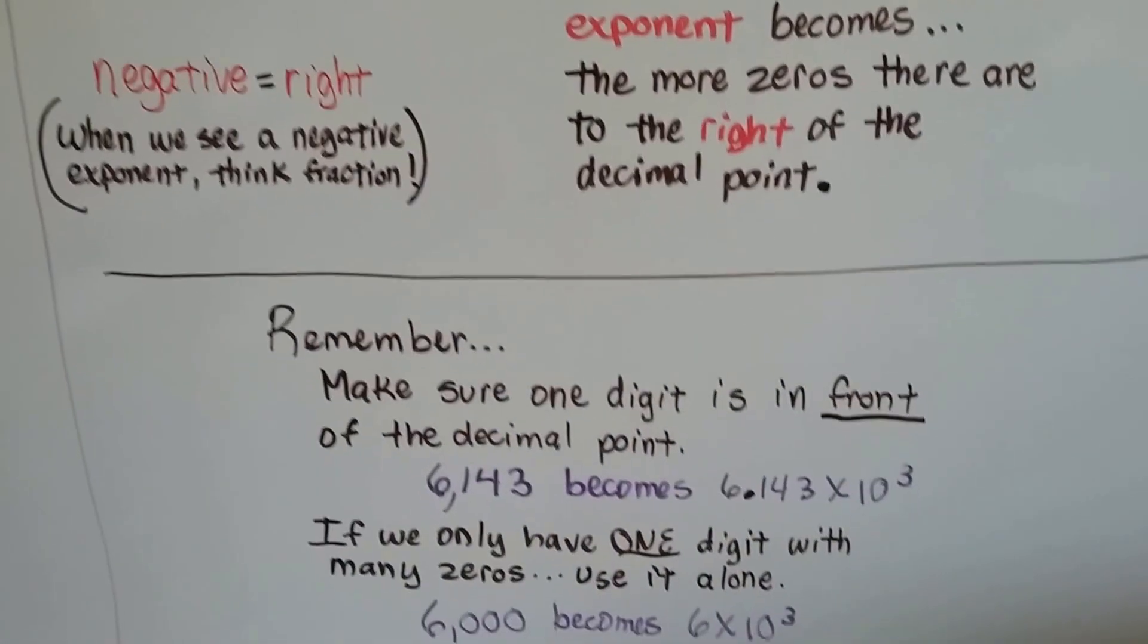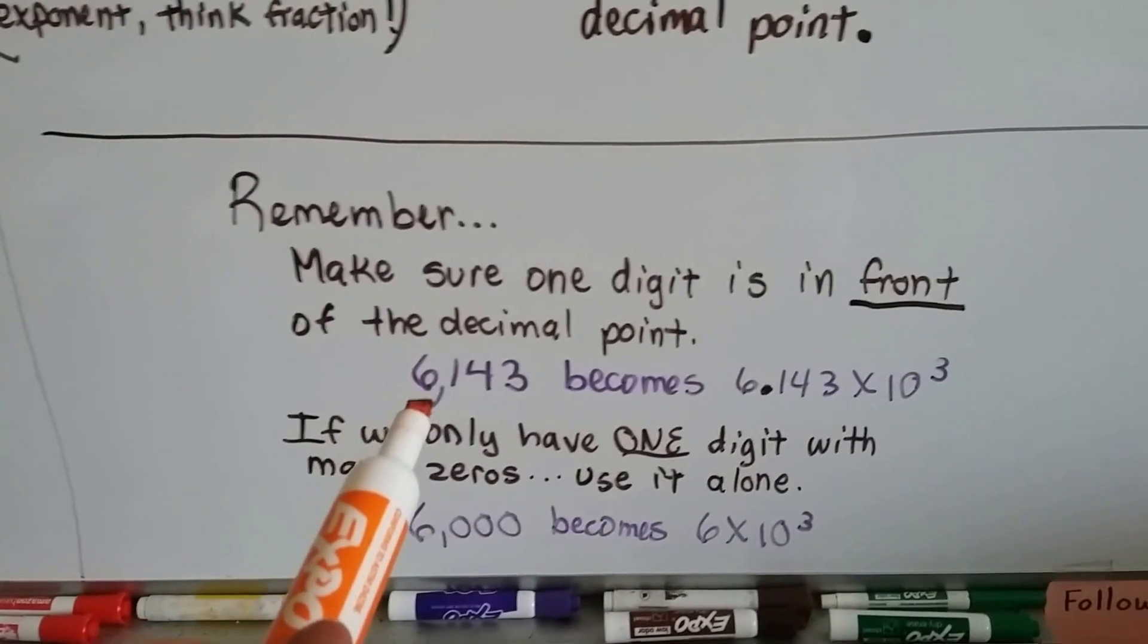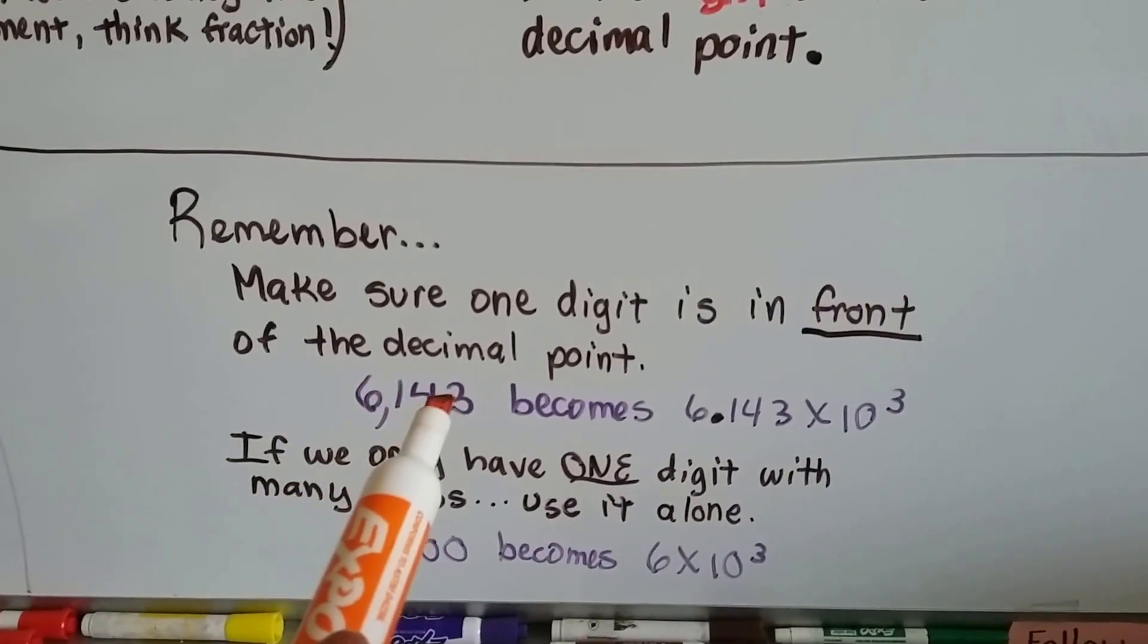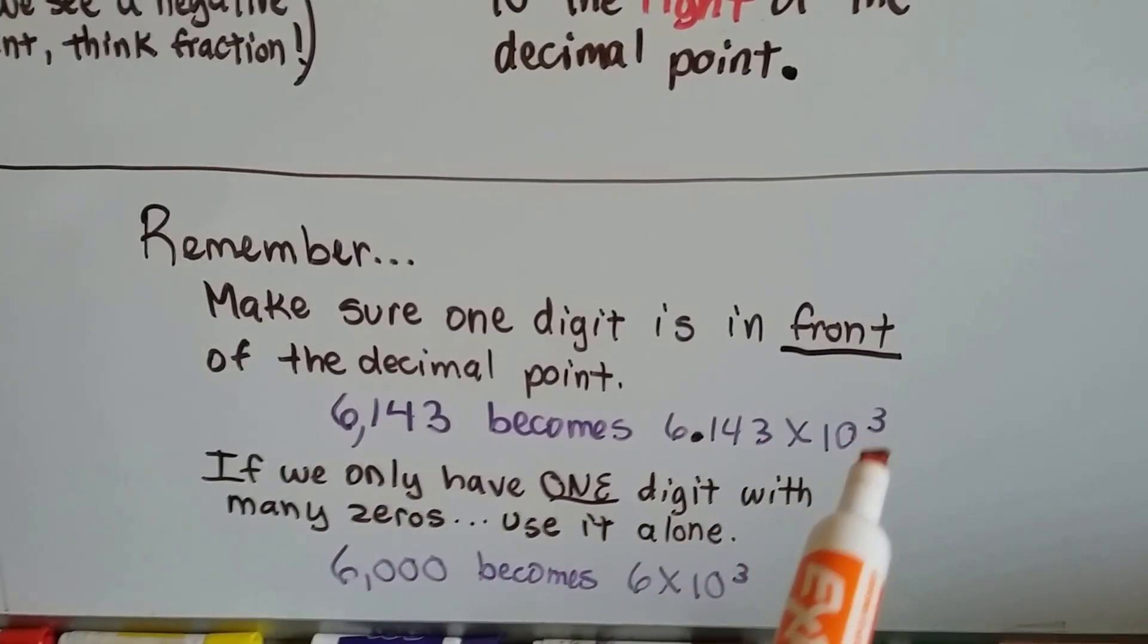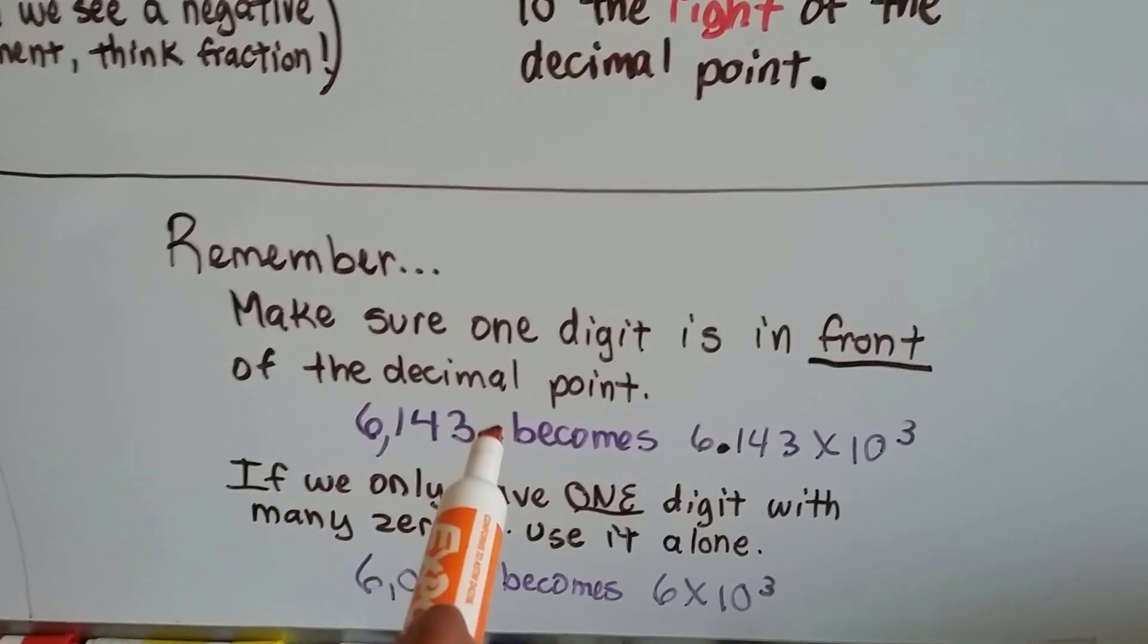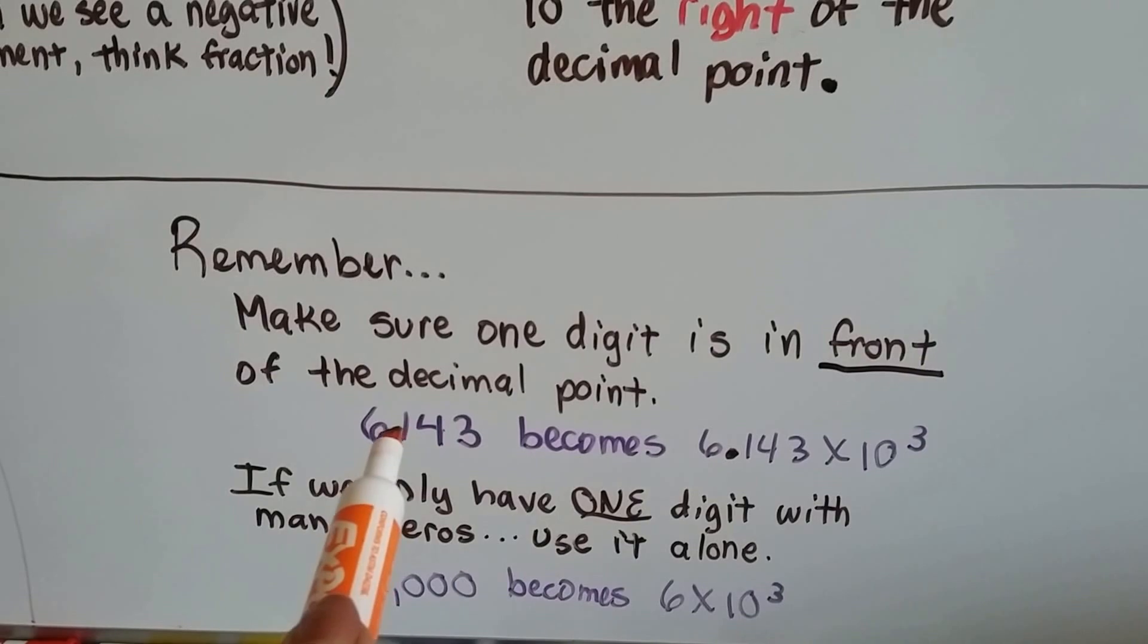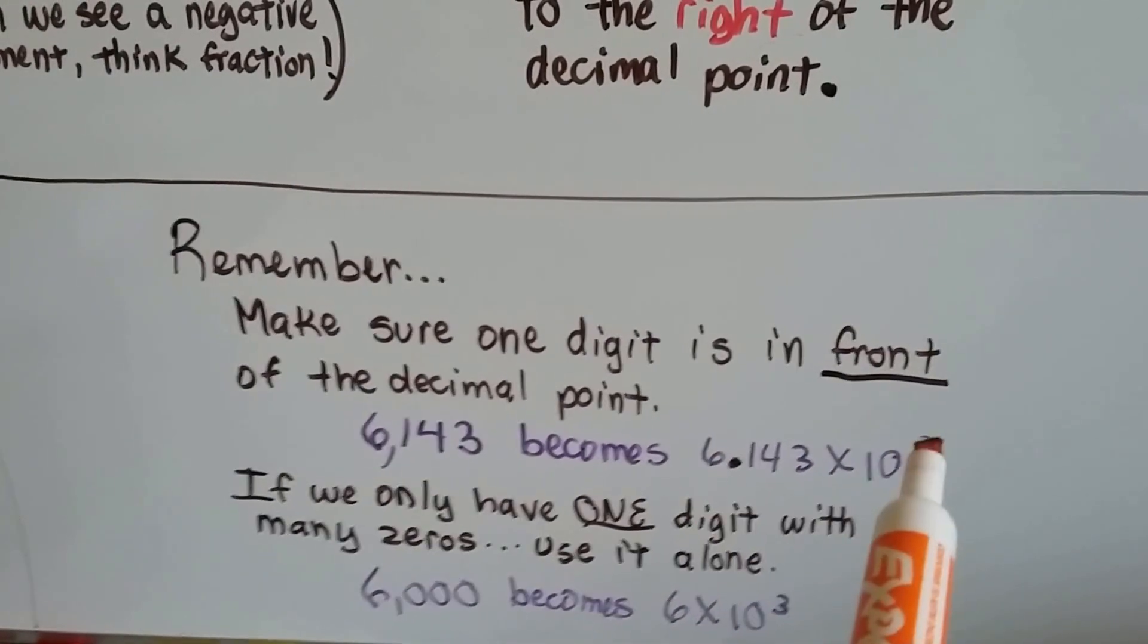Just remember to make sure that there's one digit in front of that decimal point. 6,143 would become 6.143 times 10 to the 3rd power. See, the decimal point was here behind the 3 and we moved it in between the 6 and the 1. So that's 1, 2, 3 hops. That gave us 6.143 times 10 to the 3rd.